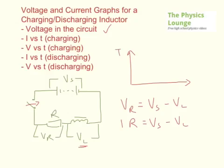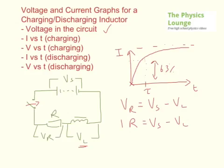We want to look at current versus time for charging. Initially the current is going to be zero when the switch is open. As soon as you close the switch it starts to rise — that's when maximum opposition to current flow occurs. You're going to get a rapid increase in current that tails off, reaching a maximum when VL equals zero. This is the same as with capacitors: you have a time constant, and that is 63% of your maximum current. That's Imax up here.